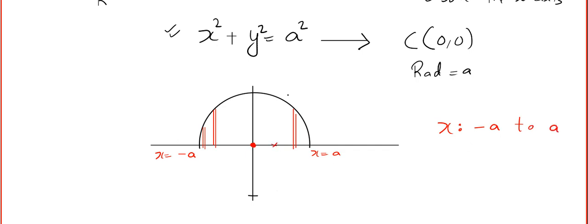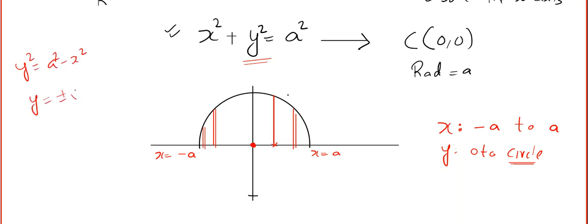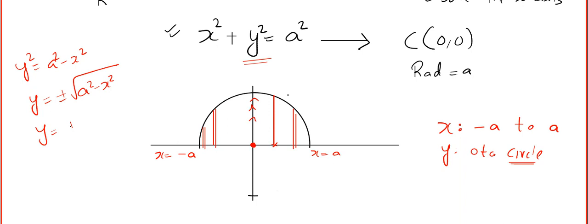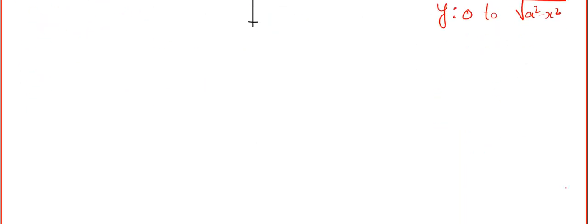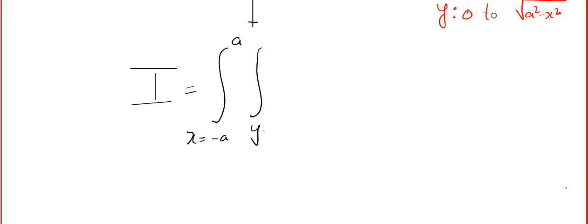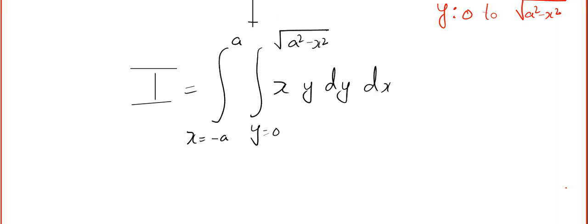y varies from 0 to the circle — that is, from the x-axis to the circle. From x² + y² = a², we get y = ±√(a² − x²). Since we are above the x-axis, y values are always positive, so we take the positive value: y goes from 0 to √(a² − x²).